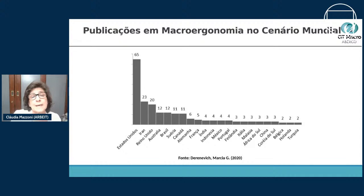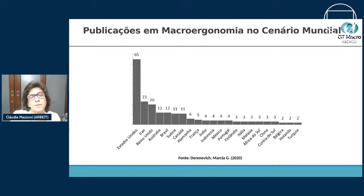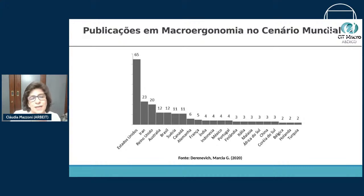Dentro do cenário mundial, os Estados Unidos lideraram com 65 publicações, e o Brasil se encontra empatado com a Austrália em quarto lugar. Nos Estados Unidos, o Raul Hendrik foi o precursor do desenvolvimento dos conceitos da macroergonomia, o que explica naturalmente o grande volume de publicações e trabalhos desenvolvidos por ele.